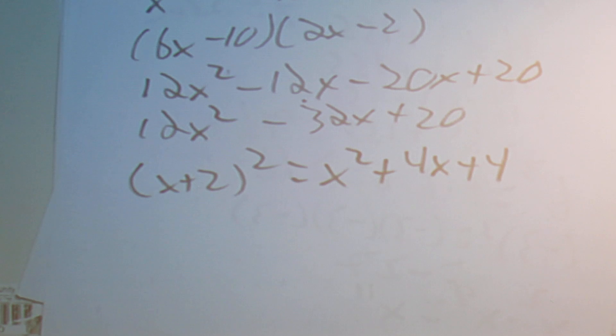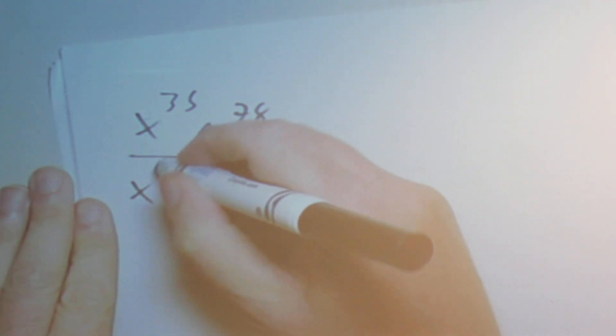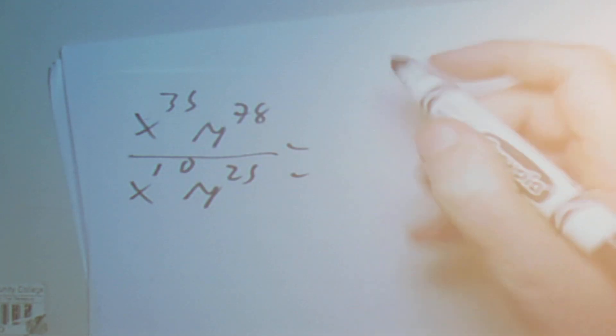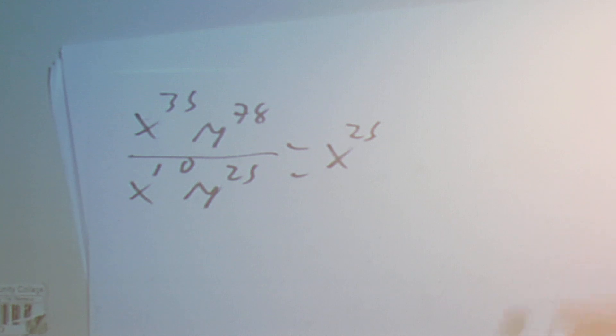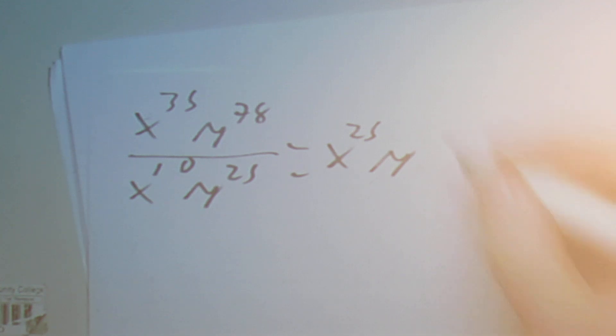Next we're going to simplify a fairly large expression. Let's say it's x to the 35 times y to the 78, over x to the 10 times y to the 25. Since everything on top has a bigger exponent than the bottom, we subtract: x to the 35 minus 10 is x to the 25, and y to the 78 minus 25 is y to the 53.